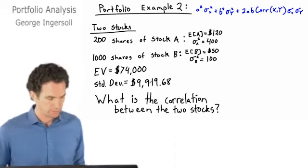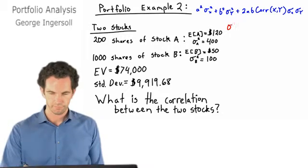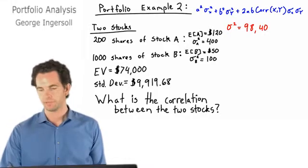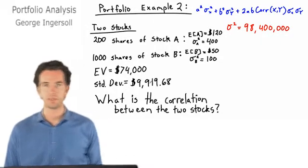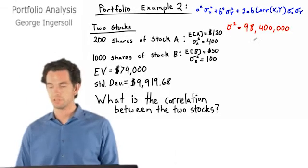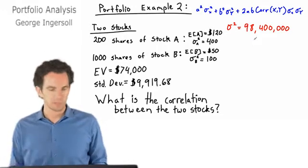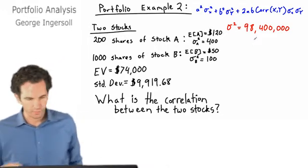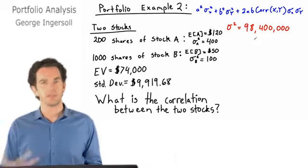We need to first find the variance from the standard deviation. If we square $9,918.68, the variance of the portfolio is approximately $98,400,000. Now we just need to set up an equation to solve for the correlation using our variance equation. The key is to recognize what you're dealing with — sometimes you'll have the correlation, sometimes you'll have the standard deviation or variance. You just figure out what your unknown is and plug everything else in.